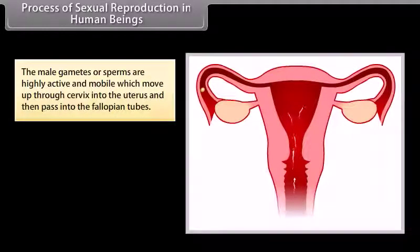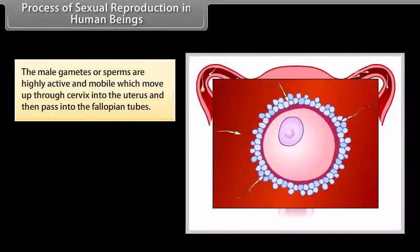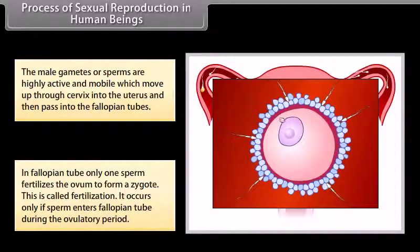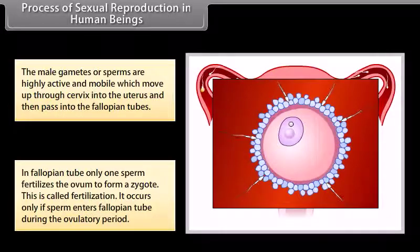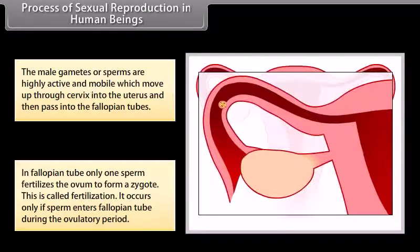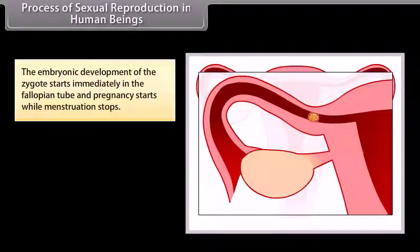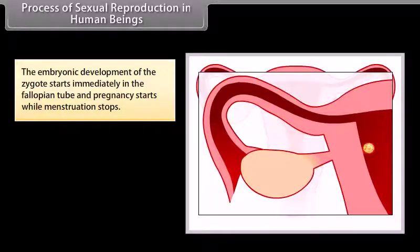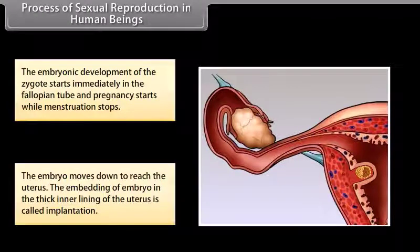The male gametes or sperms are highly active and mobile. They move up through the cervix into the uterus and then pass into the fallopian tubes. In the fallopian tube, only one sperm fertilizes the ovum to form a zygote — this is called fertilization. It occurs only if a sperm enters the fallopian tube during the ovulatory period. The embryo then moves down to reach the uterus, and its embedding in the thick inner lining of the uterus is called implantation.